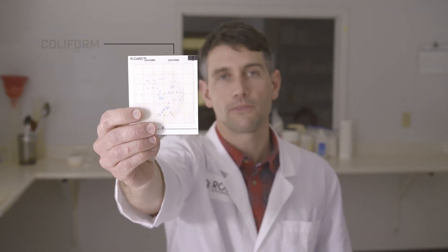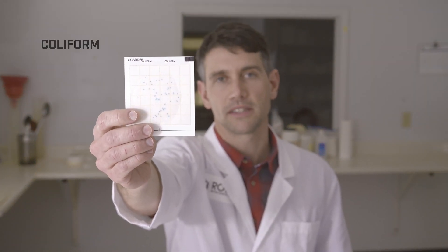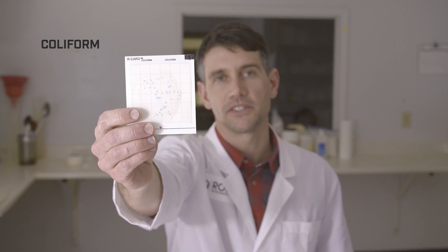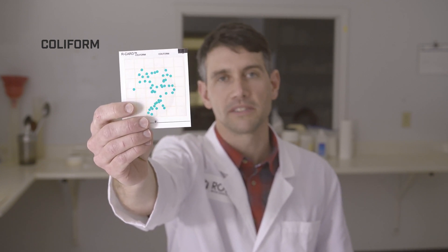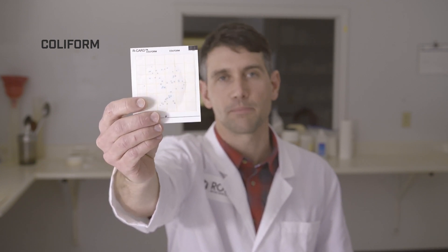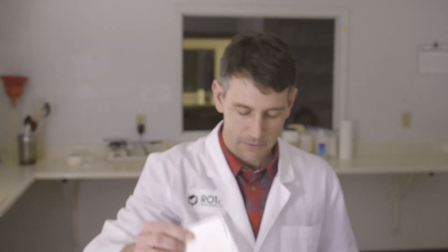The second test is for coliform. Coliforms show up as teal colonies. As you can see on the test card, there are teal colonies present, which means the test tested positive for coliform.